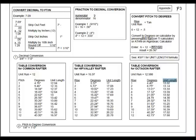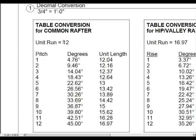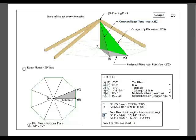We can use your appendix guide. For a unit run of 12 and a pitch of 8, your unit length will be 14.42. To solve for your mathematical length, that will be a total run of 12 times your unit length of 14.42, giving you a mathematical length of 14 feet 5 inches.